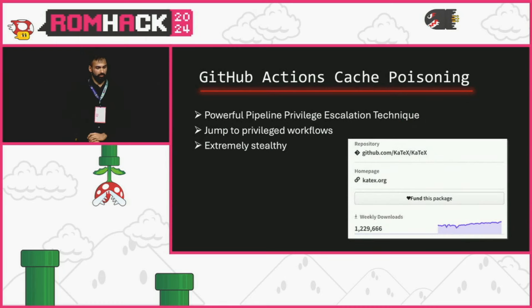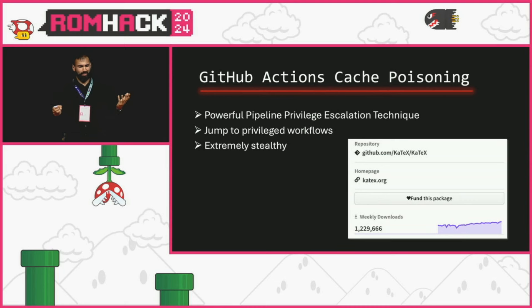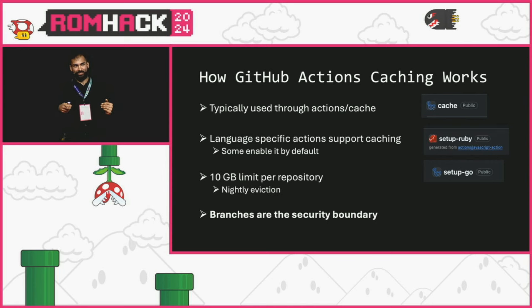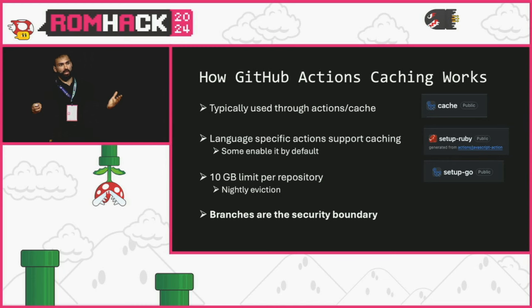Next, there's GitHub Actions cache poisoning. This isn't a vulnerability by itself but a privilege escalation technique — I was able to show I could have used it to backdoor a package for KaTeX, a LaTeX rendering library with quite a few weekly downloads on NPM. GitHub Actions caching speeds up builds. There's the actions/cache reusable action that most people use, plus language-specific reusable actions with caching as an option — some, like setup-go, have it on by default. There's also a 10 GB limit per repository.